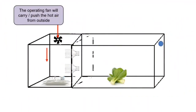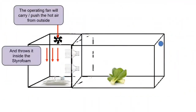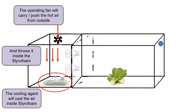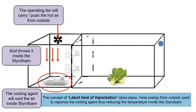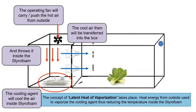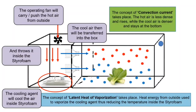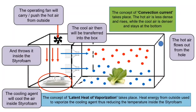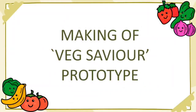First of all, the operating fan will push the hot air from outside and throw it inside the styrofoam. The cooling agent will cool the air inside the styrofoam. The concept of latent heat of vaporisation takes place — heat energy from outside is used to vaporise the cooling agent, thus reducing the temperature inside the styrofoam. The cool air is then transferred into the box through convection current. The hot air, being less dense, rises while the cool air, being denser, stays at the bottom. Lastly, the hot air flows out from the hole.